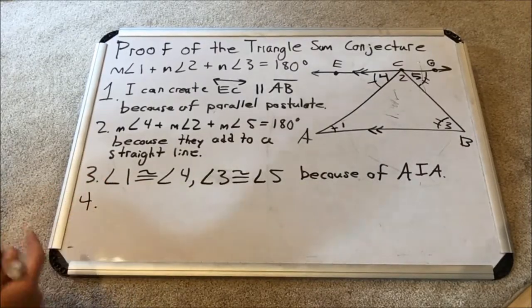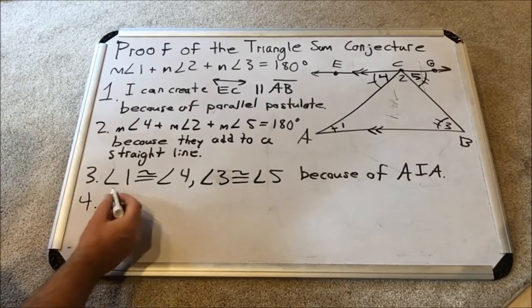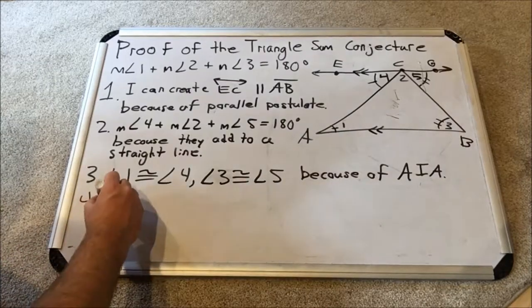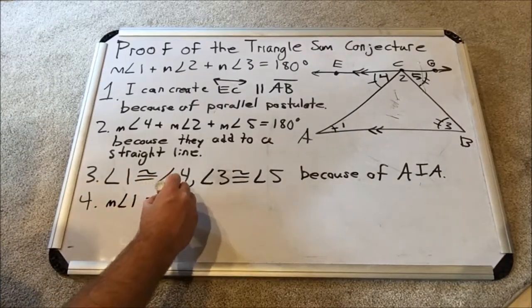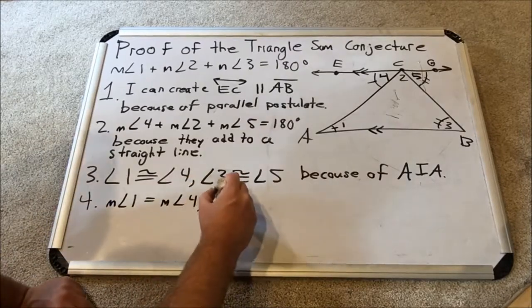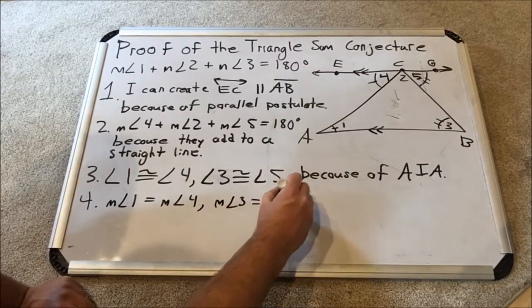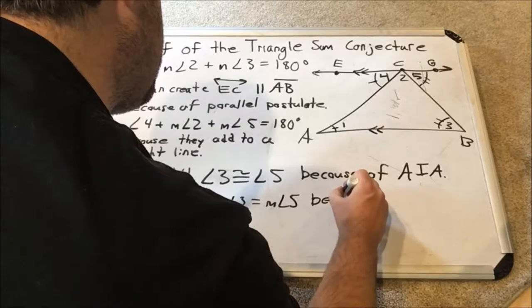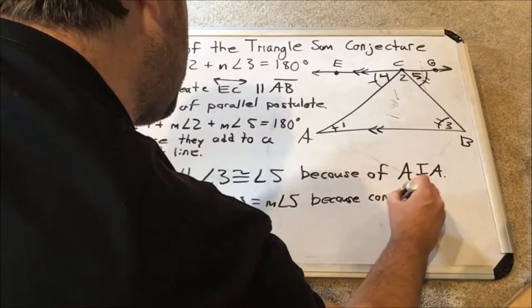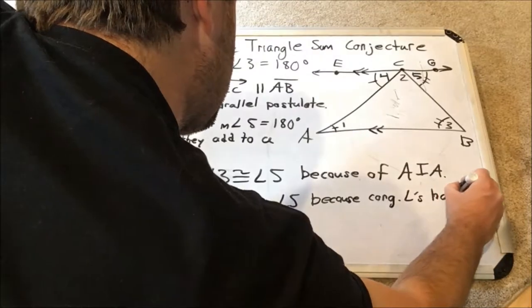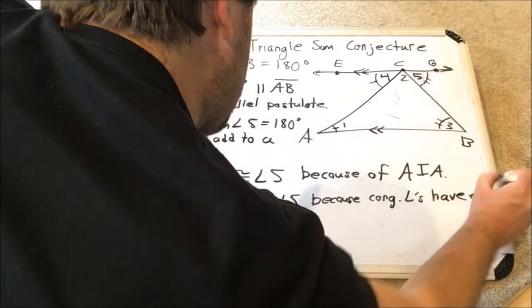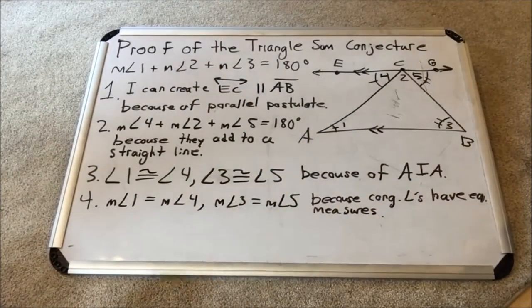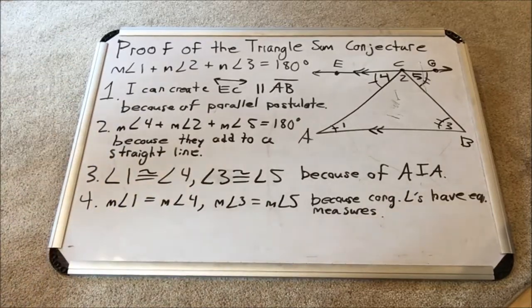Now step 4. It's a subtle step, but it's absolutely necessary. If two angles are congruent, that means that the two measures of the angles are equal. That follows directly. So measure angle 1 equals the measure of angle 4, and measure of angle 3 equals the measure of angle 5. And we'll state the reason like this: because congruent angles have equal measures. See, I went from the congruent statement to the measures are equal statement.